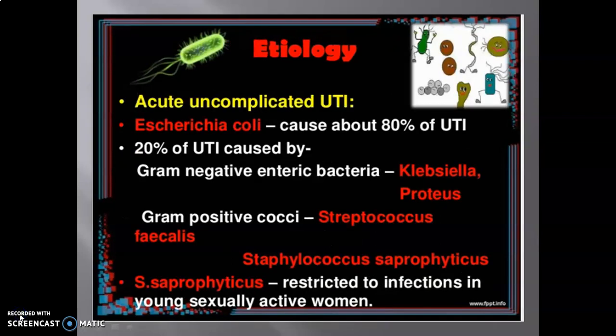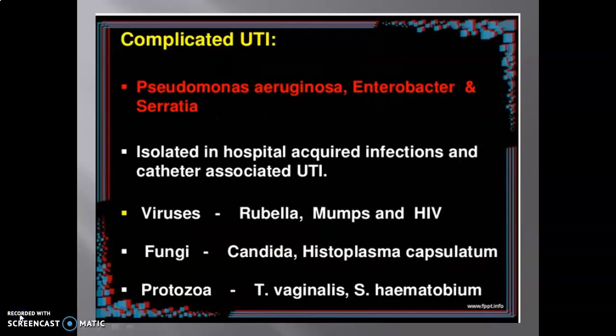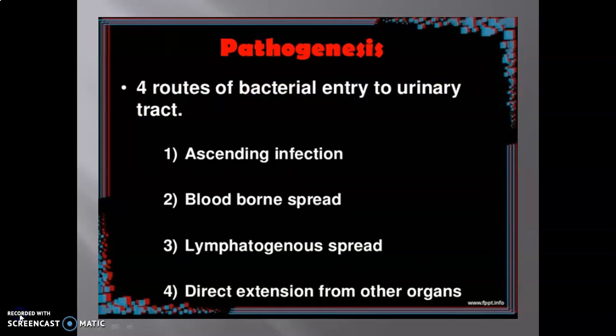In the next slide, we learn about etiology of UTI. In acute uncomplicated UTI, E. coli causes about 80% of UTIs, and 20% are caused by gram-negative and gram-positive cocci. In complicated UTI, Pseudomonas aeruginosa, Enterobacter, and Serratia are involved, isolated in hospital-acquired infection and catheter-associated UTI, whereas fungi and protozoa are also involved.